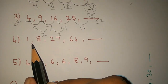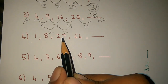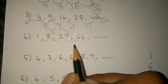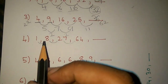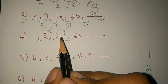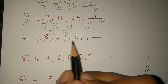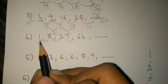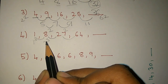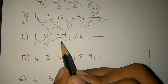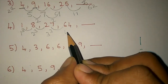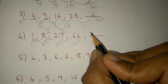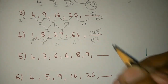Next: 1, 8, 27, 64. The difference is very high. The logic here is cube numbers. 1 cube is 1, 2 cube is 8, 3 cube is 27, 4 cube is 64. So the next is 5 cube, which is 125. We can solve it easily.